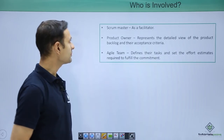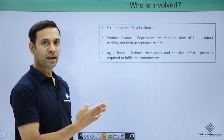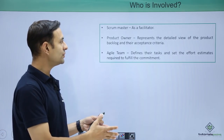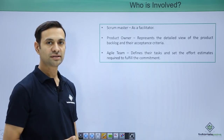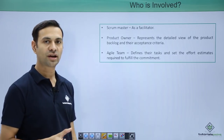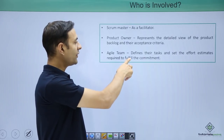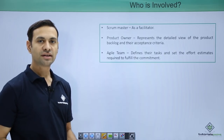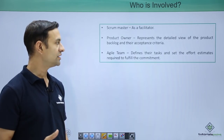Let us see who is involved. We have 3 members primarily: the Scrum Master as a facilitator, the Product Owner who is going to give you a detailed view of the product backlog and their acceptance criteria — discussing each and every user story or feature to be covered in this iteration — and the team members, the complete agile team, who define their tasks and set effort estimates required to fulfill their commitments.